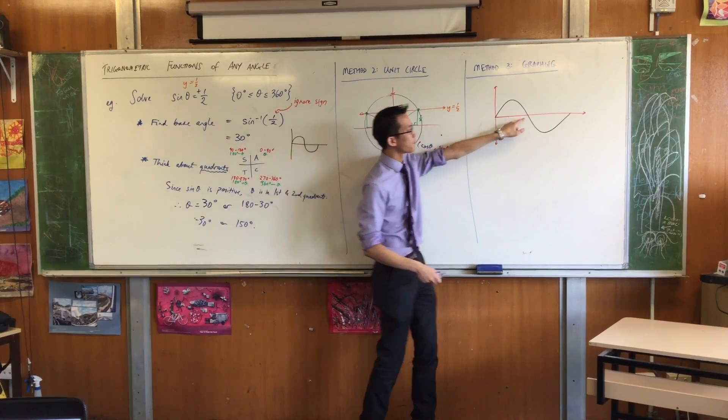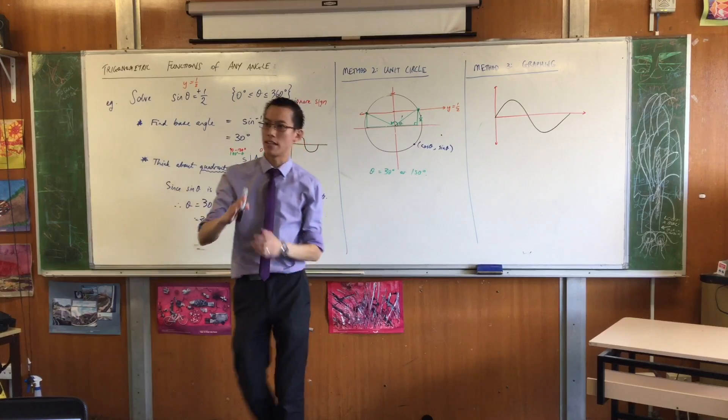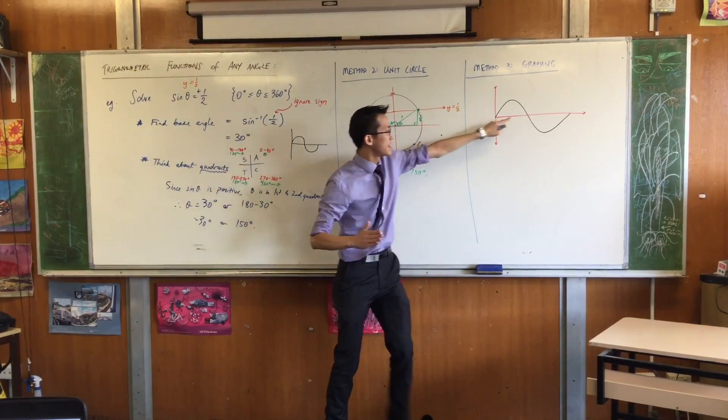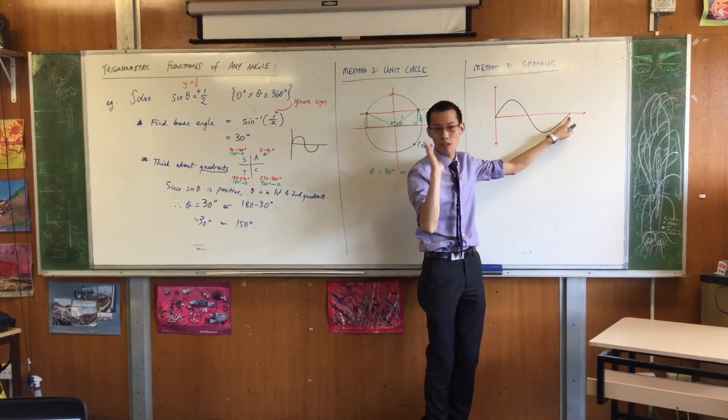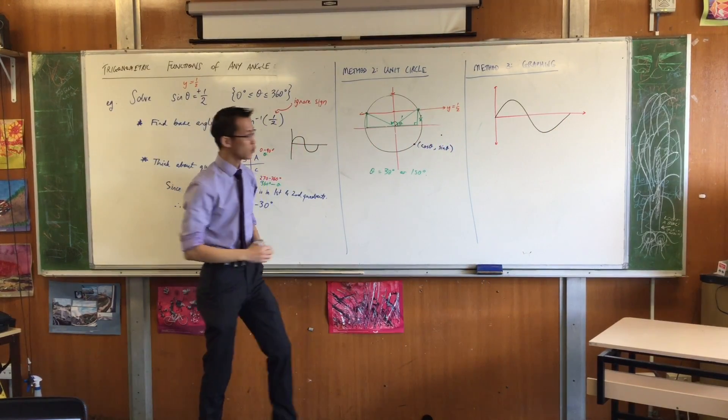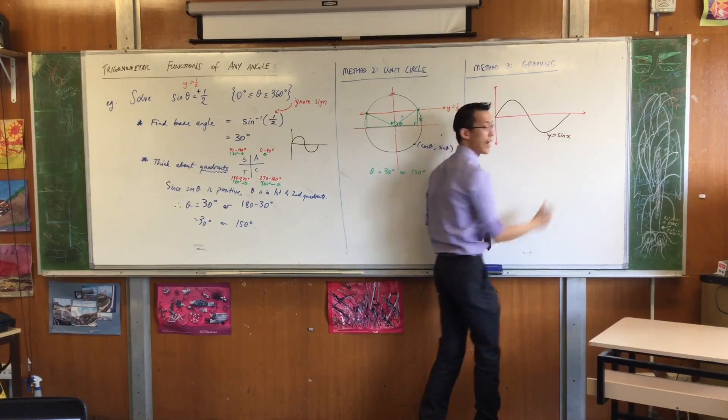But essentially what that means is see the points where it cuts the axis. See those intercepts? Have a look at the gradient there. See how it's at an angle here? Then it's at an angle there, and it's at an angle there. It's not straight up and down. So this is what y equals sine x looks like. I'm just going to label that as such.